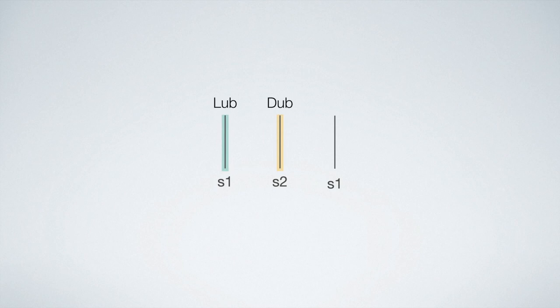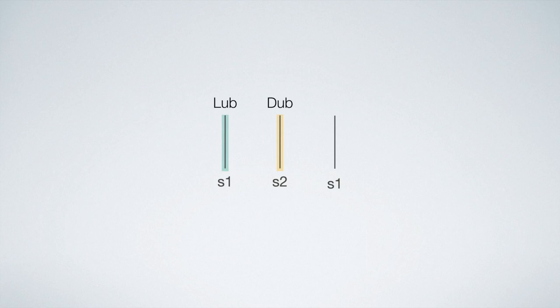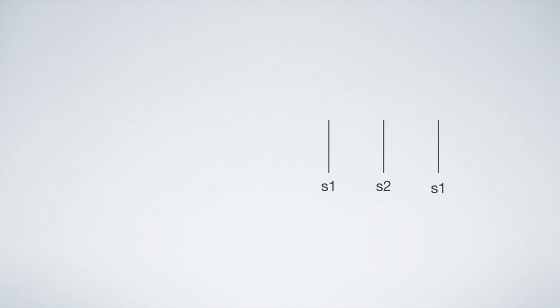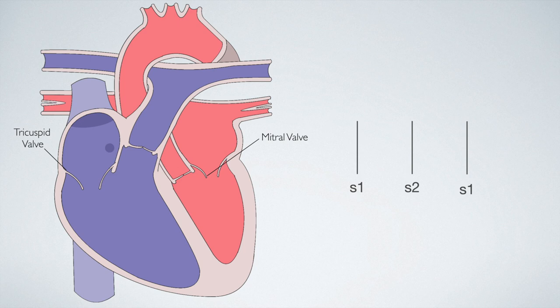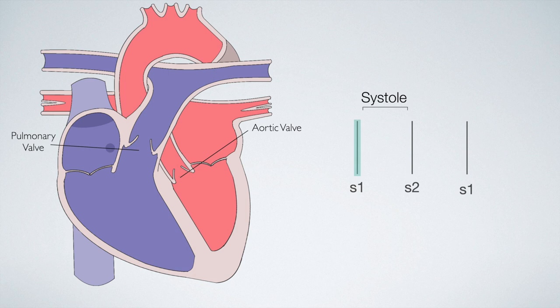Let's now take a closer look at what causes the S1 and S2 heart sounds. The S1 heart sound occurs when the tricuspid and mitral valves close simultaneously. This is followed by ventricular contraction otherwise known as systole and this forces blood through the pulmonary and aortic valves and the S2 heart sound occurs when the pulmonary and aortic valves close. A period of heart muscle relaxation then occurs and this is known as diastole after which the cardiac cycle starts all over again. Let's now add in the heart sounds with this animation.